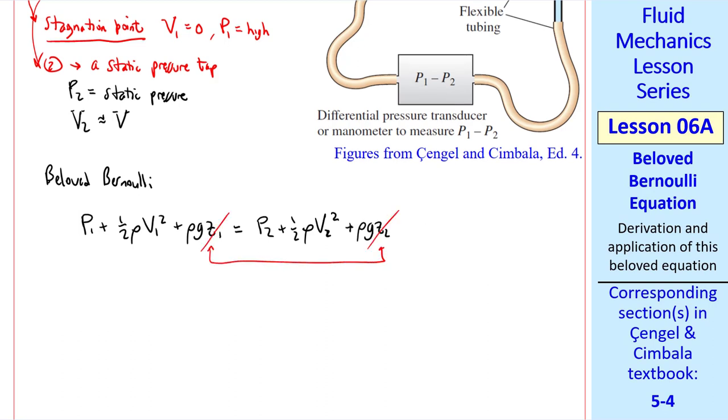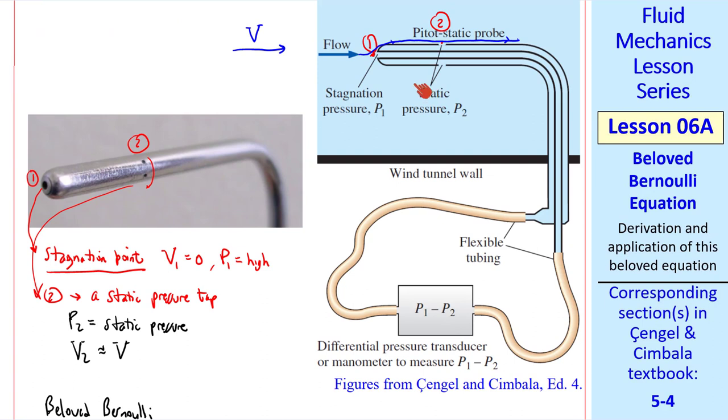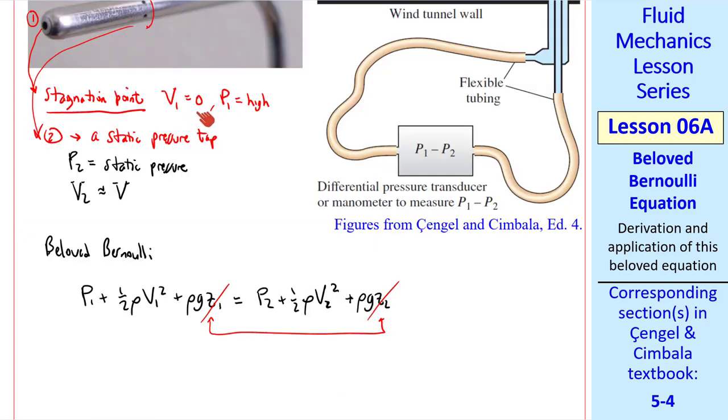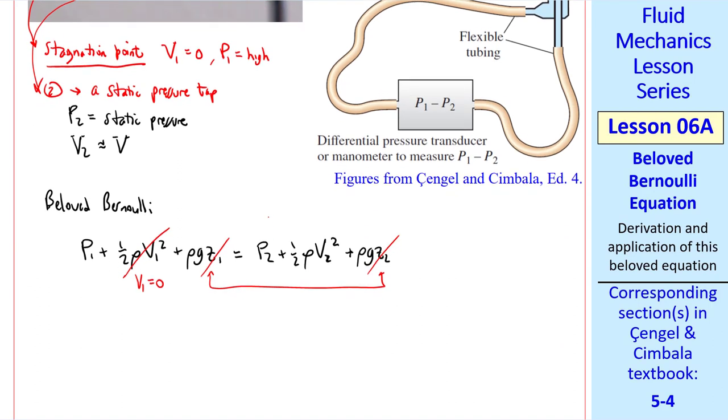...because the probe is horizontal and 2 is actually an average of all these static pressure taps. So the average Z is the same as the Z at 1. We said that V1 was 0 since it's a stagnation point, so that term goes away. And we said that V2 was V.